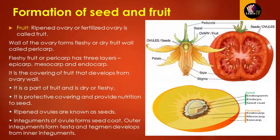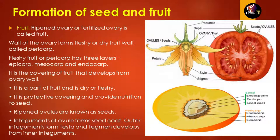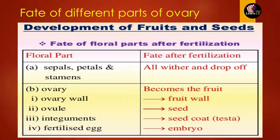The ripened ovule inside a flower is known as the seed. The integuments of the ovule form the coating of the seeds. The outer integument forms the testa, and the inner integument forms the tegmen. We have already studied about testa and tegmen in the previous topic.